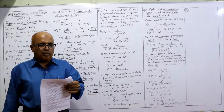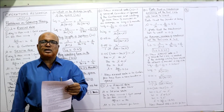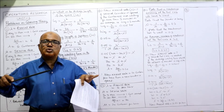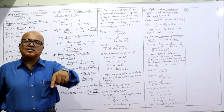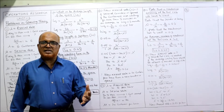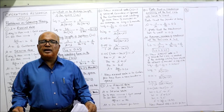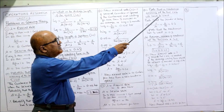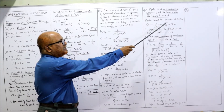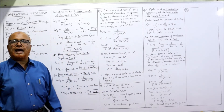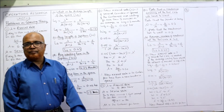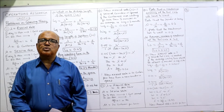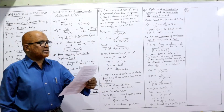First question: what is the probability that a machinist arriving at the tool crib will have to wait? The new customer will have to wait if the server is busy. The probability that the server is busy is rho, the utilization factor. The formula is lambda divided by mu: 6 divided by 20 equals 0.3. So 0.3 is the probability that the server is busy, meaning the probability that the new machinist has to wait is 0.3.